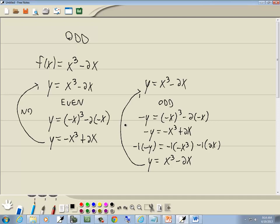Now notice it equals our original function, doesn't it? Since it equals our original function, that's why it's odd. Now if we're just using the graph, the reason why it's odd is because it's symmetric to the origin.